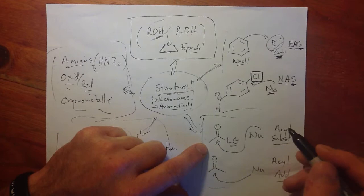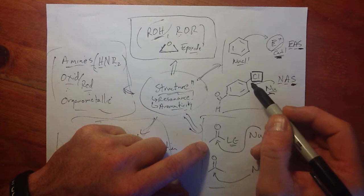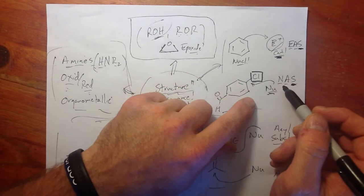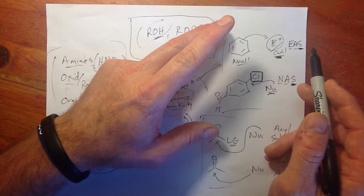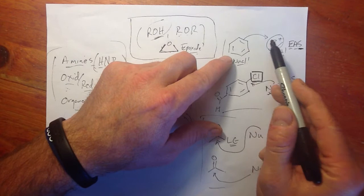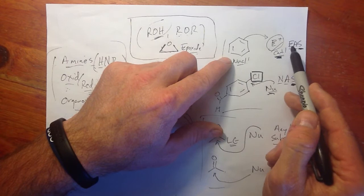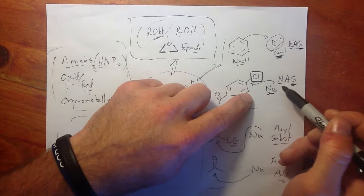This is the first of three videos on acyl substitution. We've already looked at nucleophilic aromatic substitution, where we focused on a benzene ring. In NAS we saw it was the flip of EAS, electrophilic aromatic substitution. In EAS we attacked an electrophile, and then in that second step we replaced a proton — electrophilic aromatic substitution where the electrophile replaces a proton.